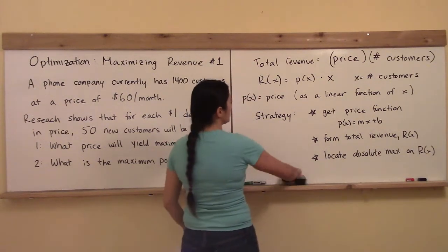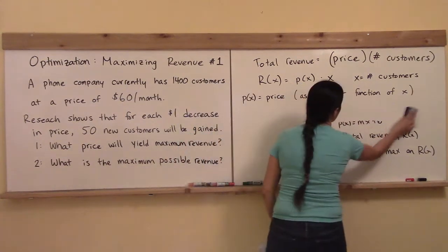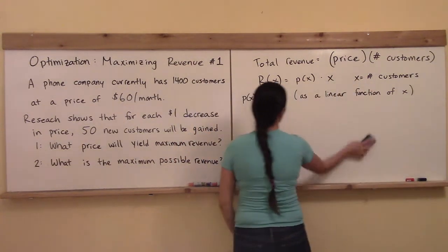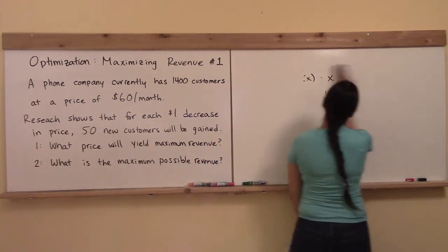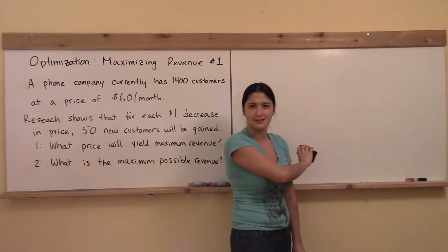The first step in this process is going to be to get the price function P(x) is equal to mx plus b. Now actually, I feel like we've been through this before. Does this sound familiar?